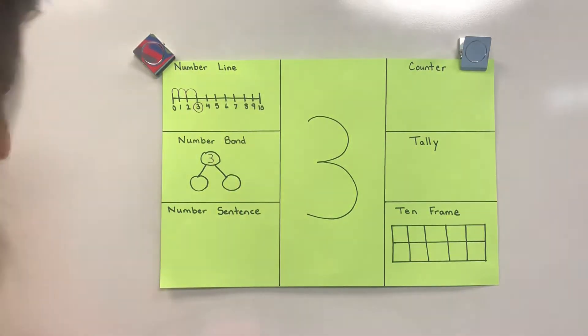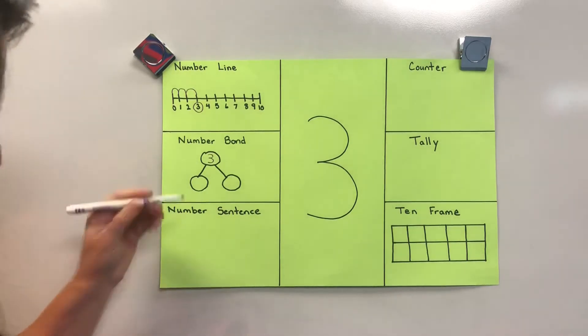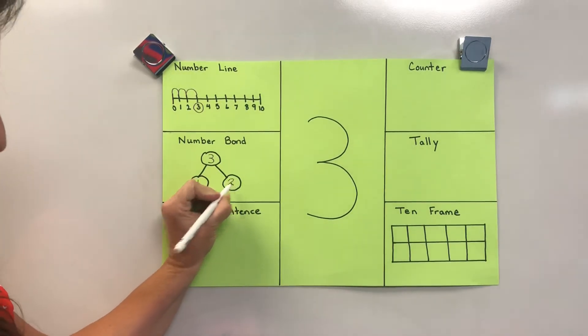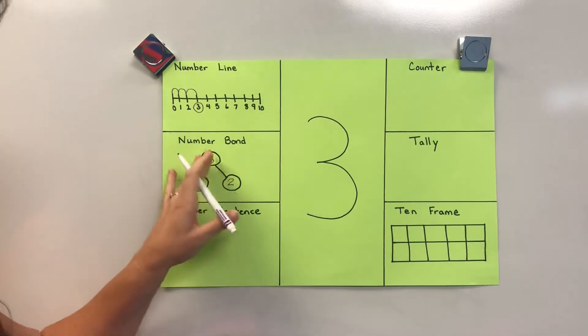I can write that in the number bond. One marker and two more markers, when you put them together, makes three.